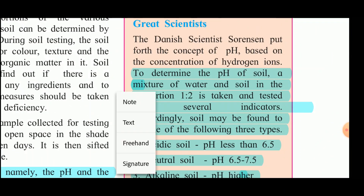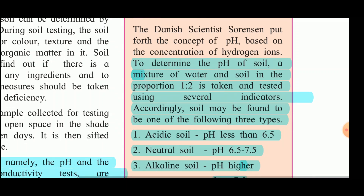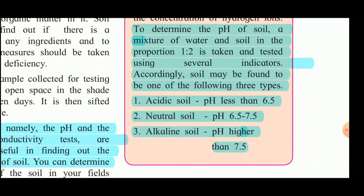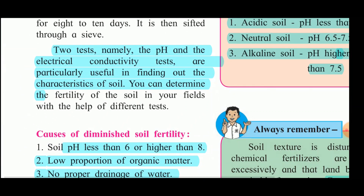Danish scientist Sorensen put forth the concept of pH based on the concentration of hydrogen ions. To determine the pH of soil, a mixture of water and soil in the proportion 1:10 or 2:1 is taken and tested using several indicators. Accordingly, soil is found to be: acidic if pH is less than 6.5, neutral if pH is 6.5 to 7.5, or alkaline if pH is higher than 7.5.